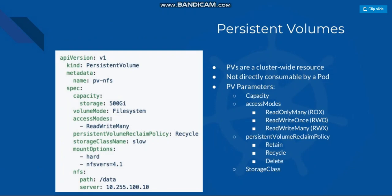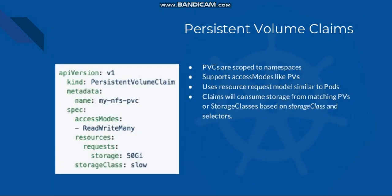PVs are a cluster-wide resource, not directly consumable by a pod. PV parameters include capacity, access modes — ReadOnlyMany, ReadWriteOnce, ReadWriteMany — and reclaim policies: retain, recycle, delete. For persistent volume claims, the PVC name is my-NFS-PVC, access mode ReadWriteMany, storage 500 GB, storage class slow. PVCs are scoped to a namespace and support access modes like PVs. They use a resource request model similar to pods, and claims will consume storage from matching PVs or storage classes based on storage class and selectors.